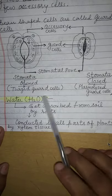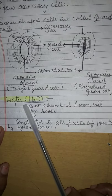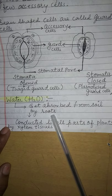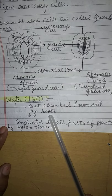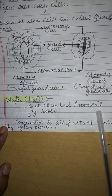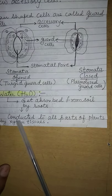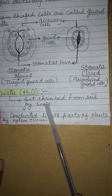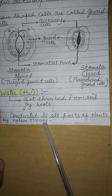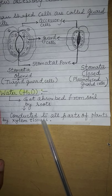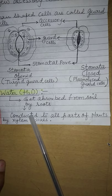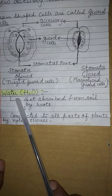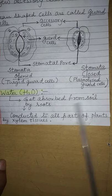The next raw material is water. Water is absorbed from soil by roots. The main role of roots in a plant is to absorb water from the soil. After absorption, the root cells conduct water molecules with the help of xylem tissues to every part of the plant — whether root, stem, or leaf. Xylem tissue conducts water along with minerals to all parts of the plant. So this raw material, water, is absorbed from the soil by roots.